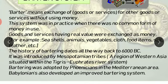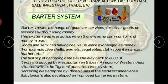Bartering was also adopted by the Phoenicians — people who lived in the Mediterranean sea area, corresponding to modern-day Syria and Israel — where the barter system was also followed. After that, we also have evidence that the Babylonians developed an improved barter system. In this way, many civilizations throughout history used the barter system. That was a brief note about the barter system.